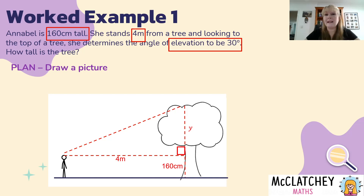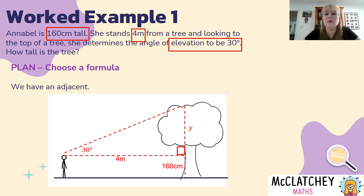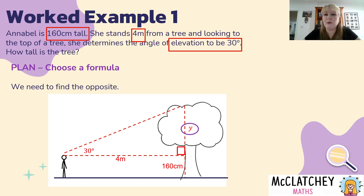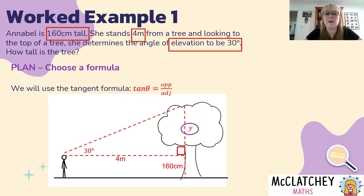Now we've got a fully annotated picture — that could actually be worth some marks in an exam, so it's important not to just try and do it without drawing a picture. We put the 30-degree angle in, which really helps us work out what formula to use. We have an adjacent of four meters — adjacent to the angle of 30 degrees — and an opposite which is y. Using SOHCAHTOA, TOA meaning tangent equals opposite over adjacent, so we're going to use the tangent formula.